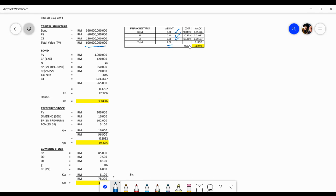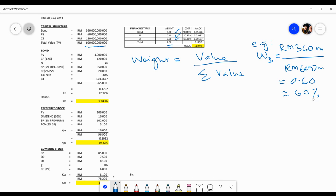So how do we get the weight? Weight is the value divided by total value. For example, weight for bond, it goes to RM 360 million divided by RM 600 million, so you get 0.6, which equals 60%.